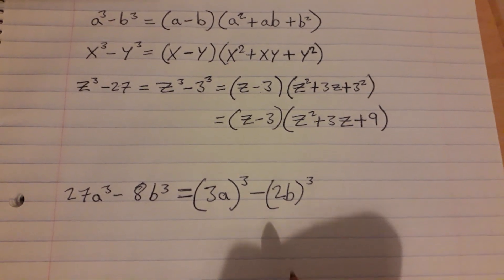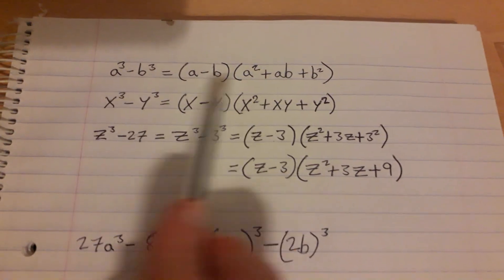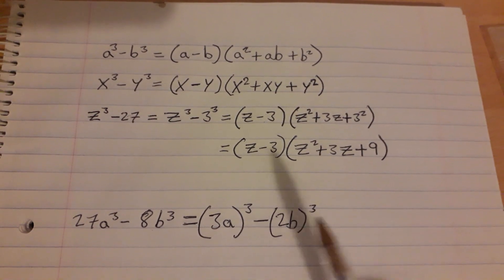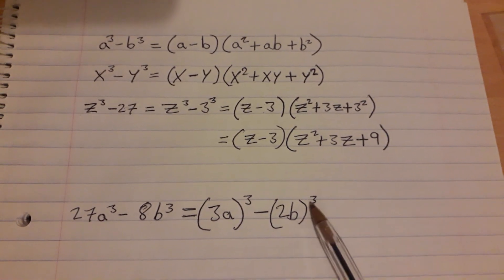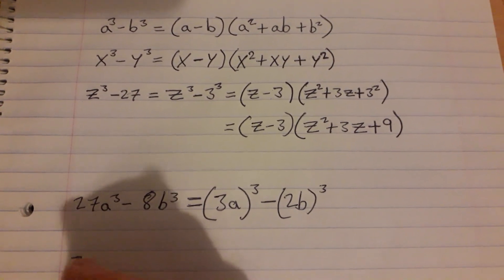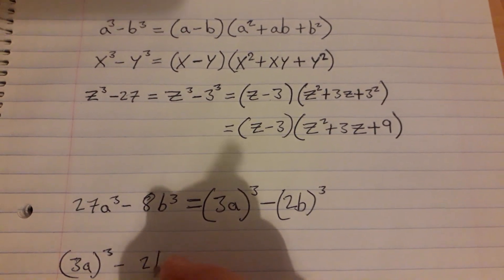Now we have something here that we can use our template up here on. It's something all to be cubed minus in the middle which is important, something all to be cubed. So using our template, I'm just going to write it down here again: 3a all to be cubed minus 2b all to be cubed.